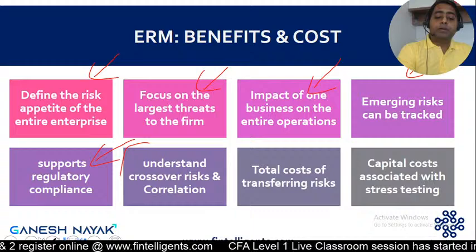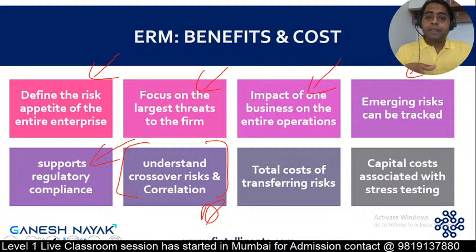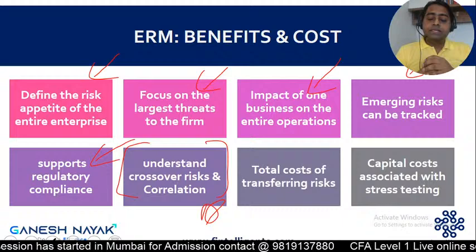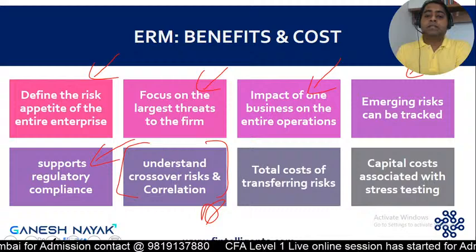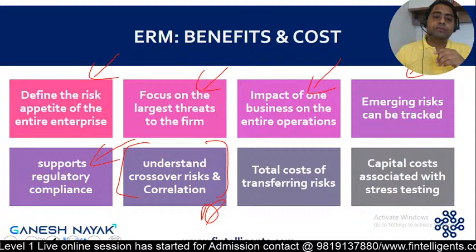Sixth benefit: understand crossover risk and correlation. Because of ERM, I am able to identify which risks are connected to other risks and what the correlation between them is. Correlation is important because I can understand when one risk goes up, how exactly it impacts my other risks — and this becomes clear only when you see the entire risk picture in one view.